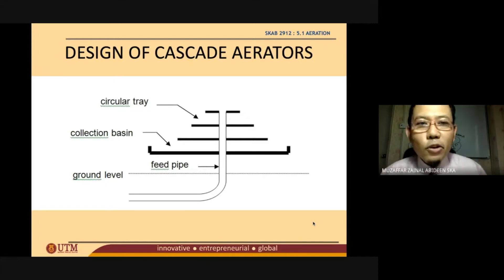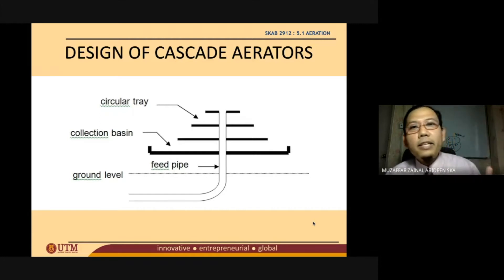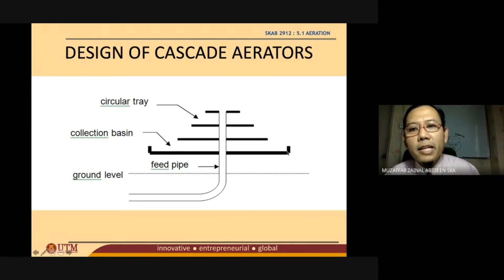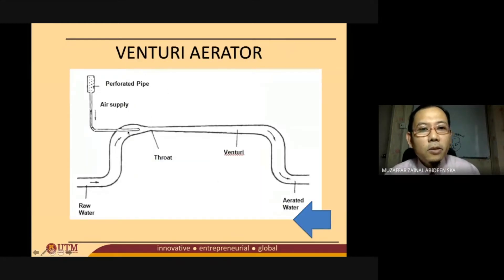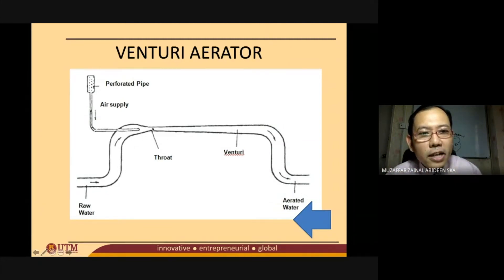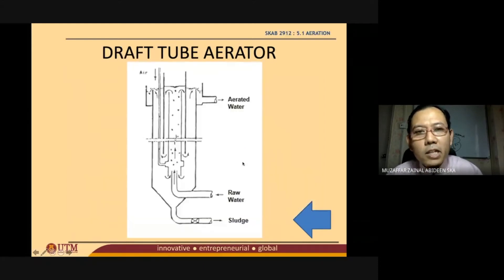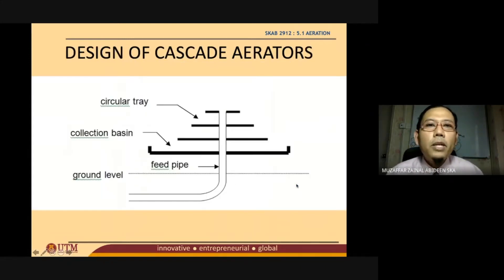We have already learned about the many types of aerators. We learned about the cascade aerator, and then we have the multiple platform aerator — multiple platform and cascade aerator are basically the same. Then we have the venturi aerator, which has a very narrow lane creating turbulence where air is pumped in and the water gets aerated. The last one is the draft tube aerator.